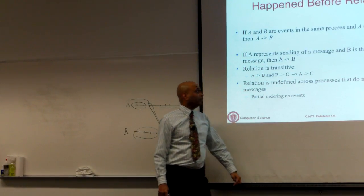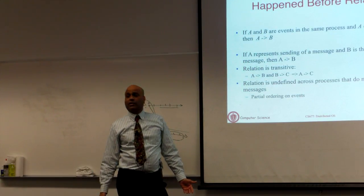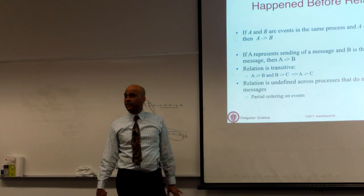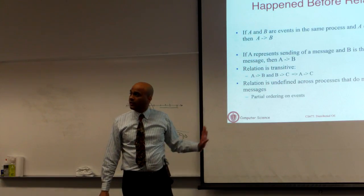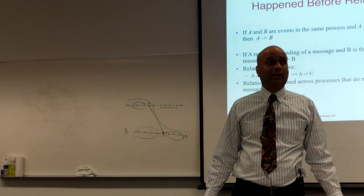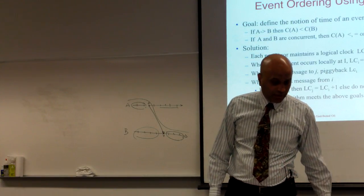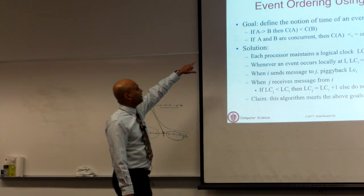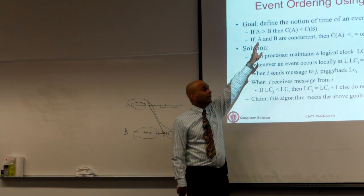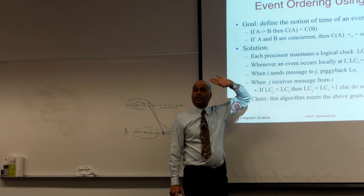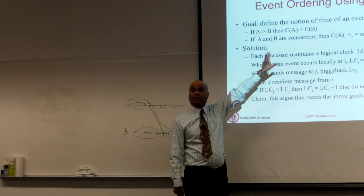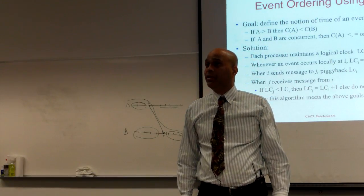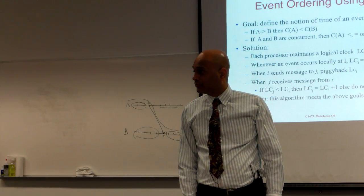The happened-before relationship is undefined across processes that do not exchange messages, so it is a partial ordering, not a total order. Now here is our logical clock algorithm. The goal is: if A has happened before B, we want to have a technique that assigns clock timestamps such that the clock value of A is less than the clock value of B. We will define a logical clock which is simply an integer, and timestamp events with integer values.